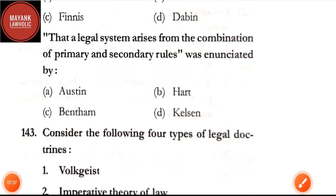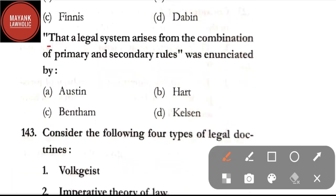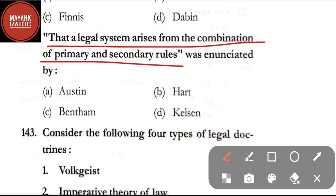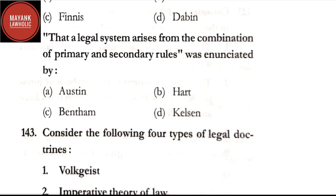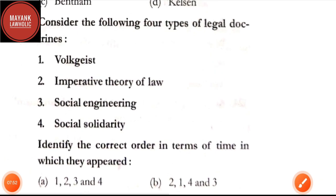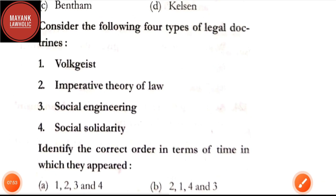Question number 141: natural law is not considered as absolute but as relative — it is natural law with variable contents. This observation relates specifically to — Stammler, Del Vecchio, Finnis, or Davin. The correct answer is option A, Stammler. Question number 142: that the legal system arises from the combination of primary and secondary rules was initiated by — option A: Austin; option B: Hart; option C: Bentham; option D: Kelsen. The correct answer is option B, Hart.